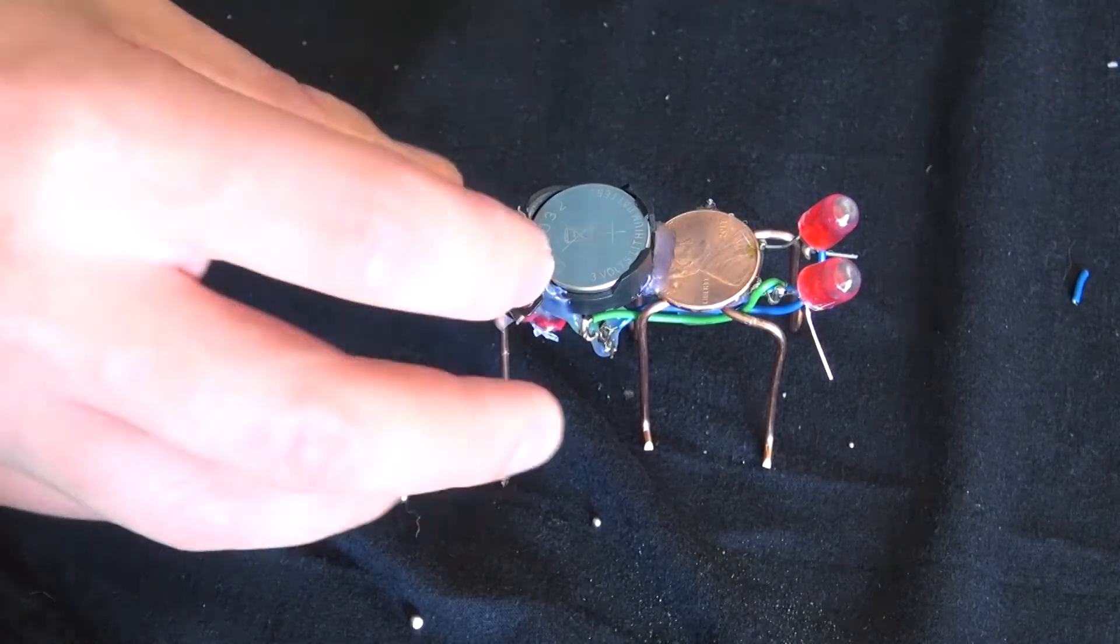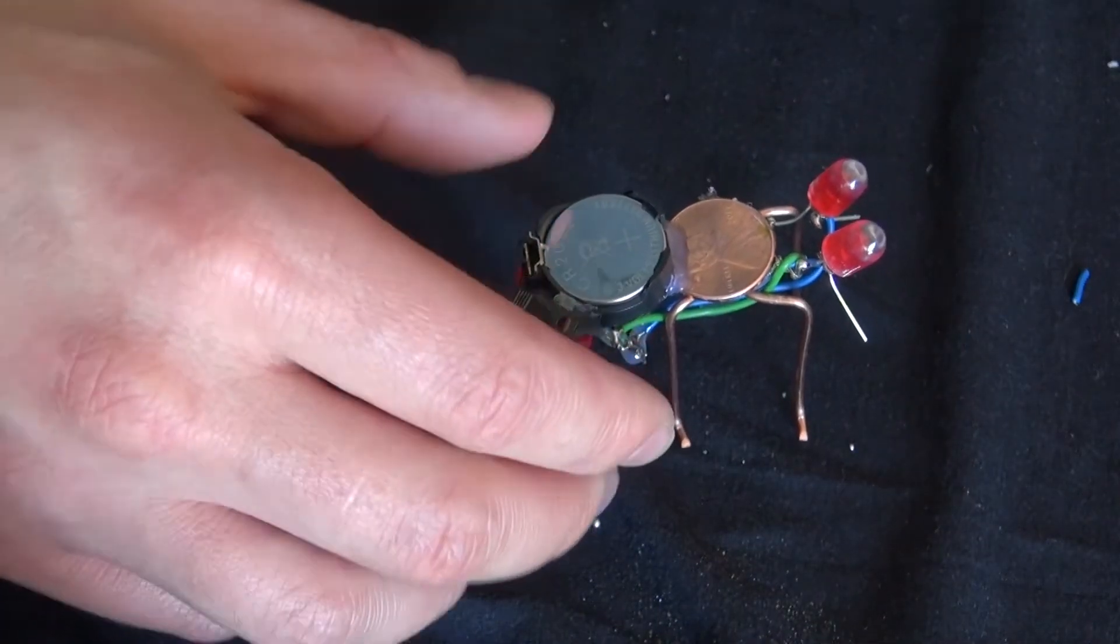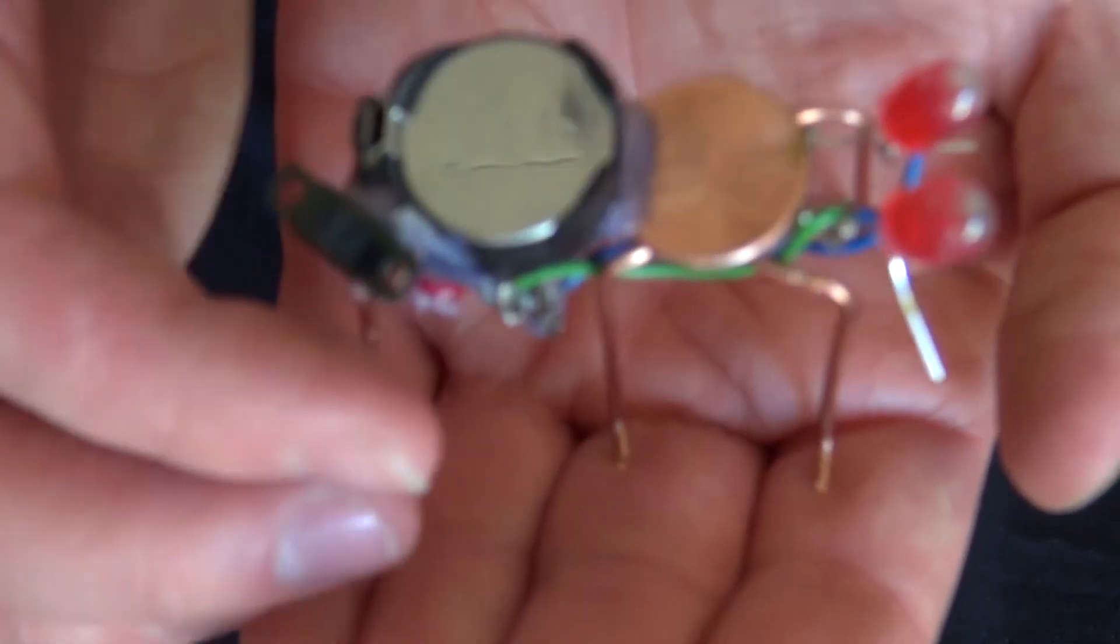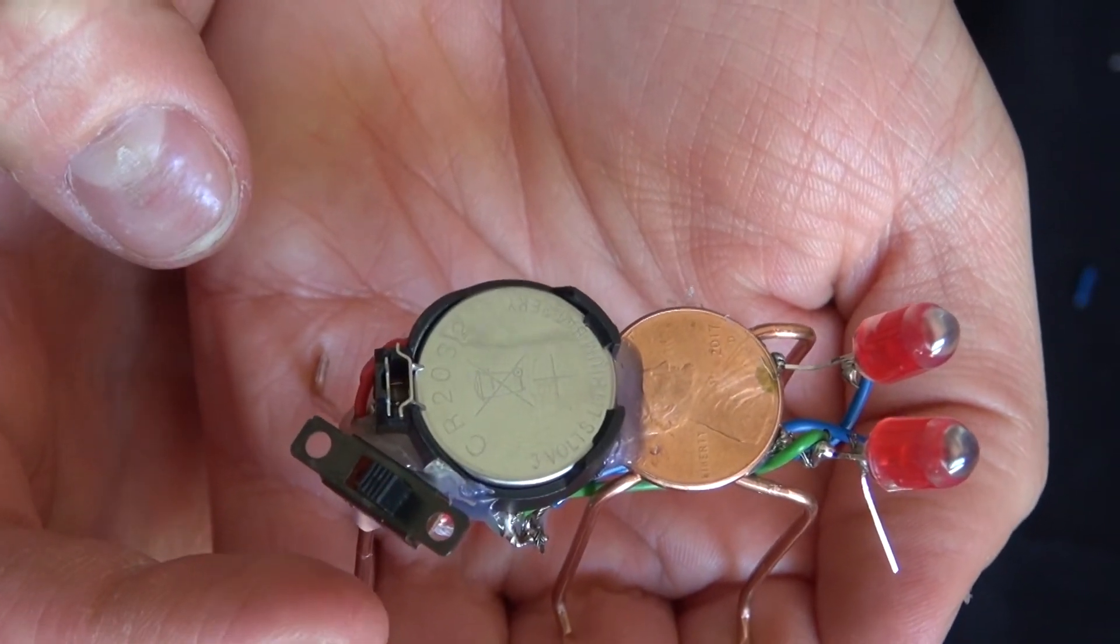And there you have it. The jitterbug circuit is complete. And it turns on and it works. Not on top of this material. I need to have a smoother material for it to vibrate better. But there you have it. The circuit is complete.